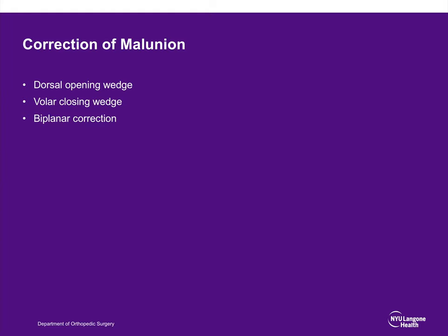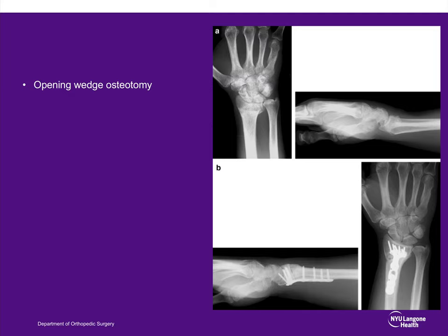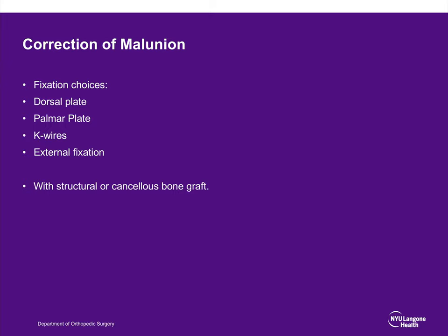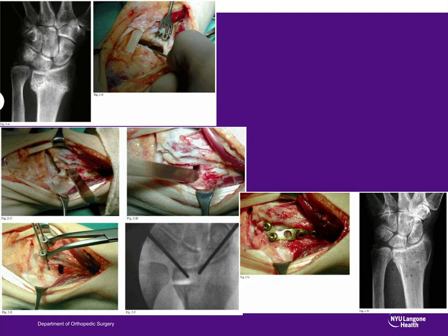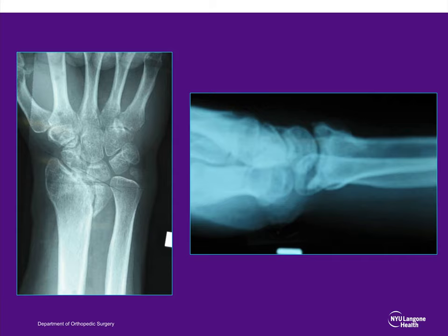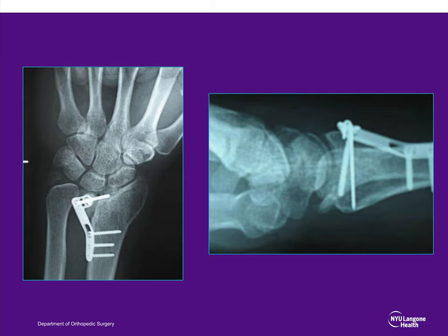Malunions are common and sometimes need fixing, using dorsal opening wedge osteotomy, volar closing wedge osteotomy, or biplanar correction. Here is an example of an opening wedge osteotomy with iliac crest bone grafting and a volar locked plate. Intra-articular malunions can be treated with intra-articular osteotomies with good results, best done earlier rather than later. Here is an example of a nonunion of a dorsal ulnar fragment treated with open reduction, internal fixation, and bone grafting.